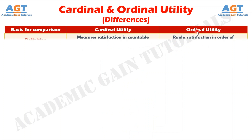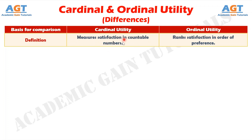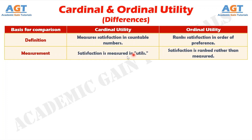Difference number 1: cardinal utility explains that satisfaction can be measured in numbers, whereas ordinal utility states that satisfaction can only be ranked in order of preference. Number 2: cardinal utility measures satisfaction in utils, whereas ordinal utility ranks satisfaction without assigning numerical values.